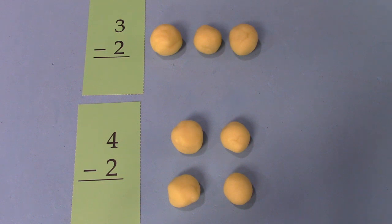And this is my favorite way to practice. Here we have 3 minus 2. I have 3 little balls of Play-Doh and I'm going to smush 2, 1, oh it's stuck to my finger, 2. How many do I have left? I have 1.